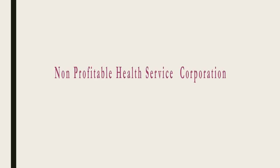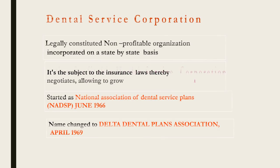What are non-profit health service corporations? They are of two types: dental service corporations, and Blue Cross or Blue Shield. Dental service corporations are legally constituted as non-profit organizations incorporated on a state-by-state basis. They were started in 1966 by the National Association of Dental Service Plans, and later in 1969 the name was changed to Delta Dental Plans Association.